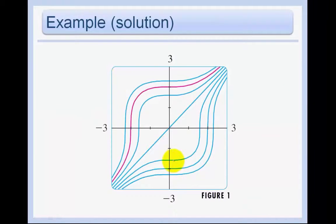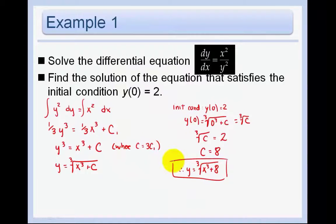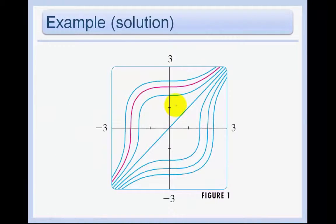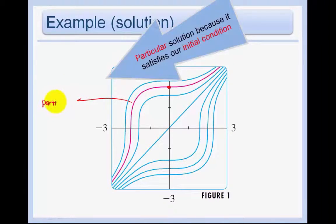Here's a graphical interpretation of our solution. We knew that y(0) equals 2 was our initial condition, so we have a family of curves, and we know that this one is our particular solution based on the initial condition we were given.